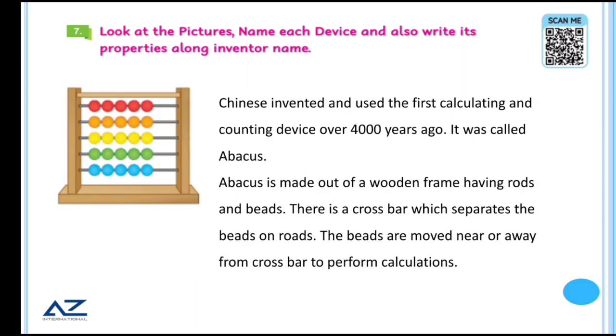UNIVAC was built specially for United States Census Bureau. Then, abacus. Chinese invented abacus. It was the first calculating and counting device over 4000 years ago. Abacus is made out of a wooden frame having rods and beads. There is a cross bar which separates the beads on roads. For example, you have given something to someone. You move beads to one side. You want to count them back and take them back. So however many beads you moved to one side, move them back to the other side and count them back.